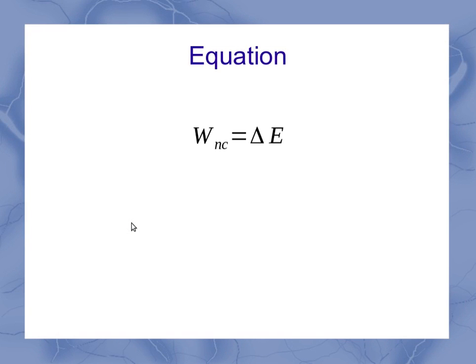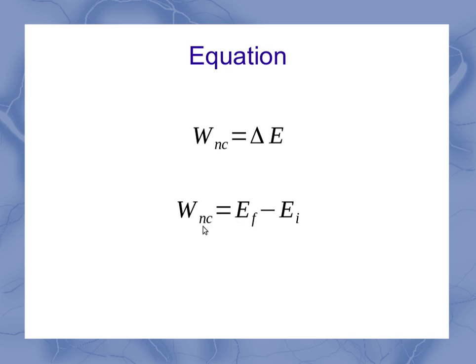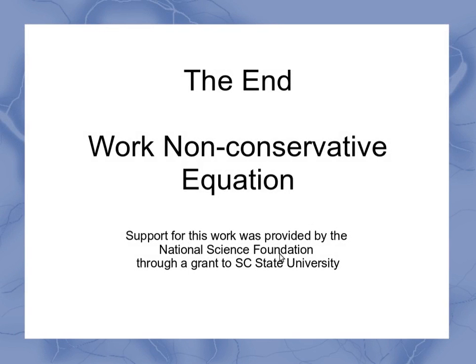Coming back to the equation, I've got that total work non-conservative on the left side, and I've got my change in mechanical energy on the right side. Remember that change in mechanical energy could also be written as energy final minus energy initial. All of these terms — both work and energy terms — are going to have units of joules. That's your quick introduction to the non-conservative equation for work.